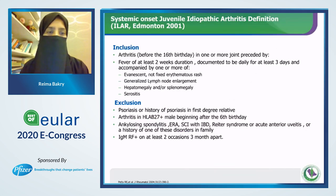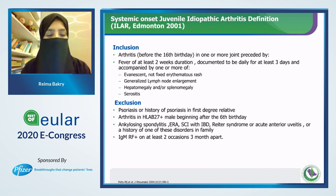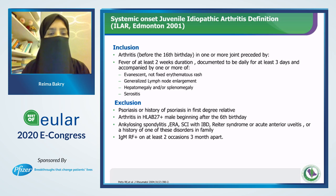Starting with the systemic onset of juvenile idiopathic arthritis definition — the EULAR criteria published in 2001, which include the inclusion and exclusion criteria. The inclusion criteria: arthritis present before the age of the 16th birthday in one or more joints, preceded by fever — documented to be daily for three days — and accompanied by one or more of the following: non-fixed evanescent erythematous rash, generalized lymphadenopathy, hepatomegaly, and/or splenomegaly and serositis.